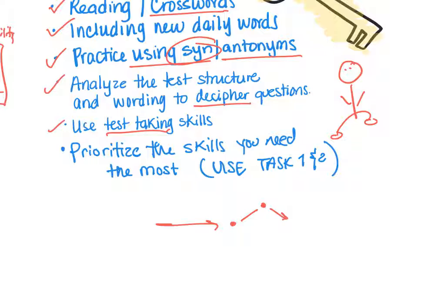The test is adaptive: if you miss a question, the difficulty goes back down; if you miss again, it goes down further. You want the difficulty going up, because that shows a higher competency level. Don't be afraid if you're seeing hard questions on the computer-based test — it means you're doing something right. Use your test-taking skills: eliminate answers, make educated guesses, and have a strategy for that.